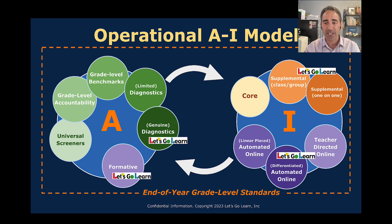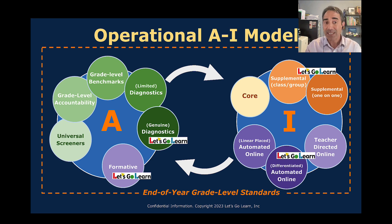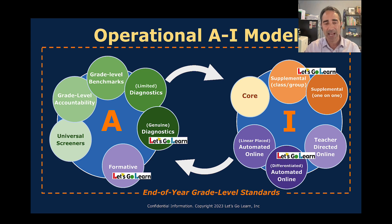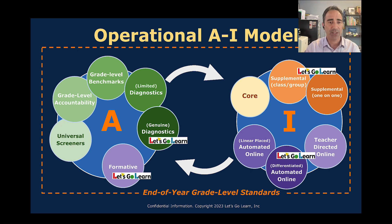The third circle is teacher-directed online instruction, where a teacher identifies what a student needs — for example, three-digit by two-digit multiplication — and assigns specific lessons accordingly. The dotted line around everything represents the goal: you do this AI cycle so that students can meet end-of-year grade level standards. Every grade level has expectations — by the end of fifth grade, students should know decimal place value and other specific content. The AI cycle is designed to get students to reach those standards by the end of the year.